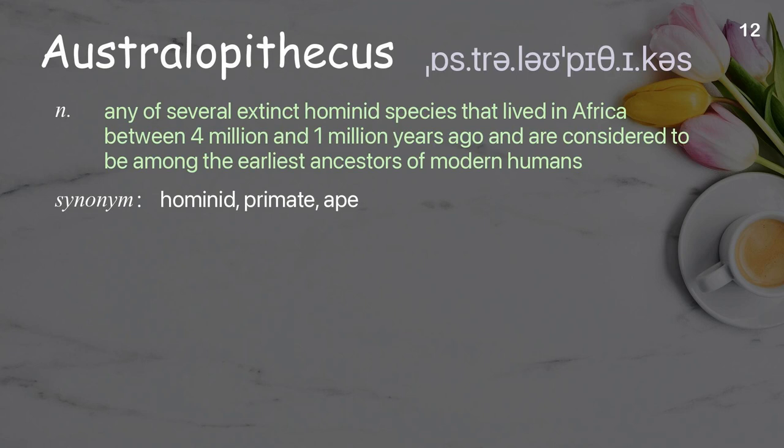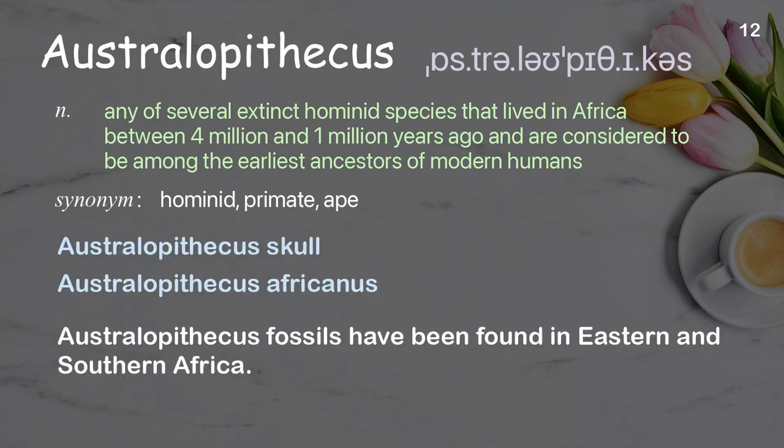Australopithecus: Any of several extinct hominid species that lived in Africa between 4 million and 1 million years ago, and are considered to be among the earliest ancestors of modern humans. Examples: Australopithecus skull. Australopithecus africanus. Australopithecus fossils have been found in eastern and southern Africa.